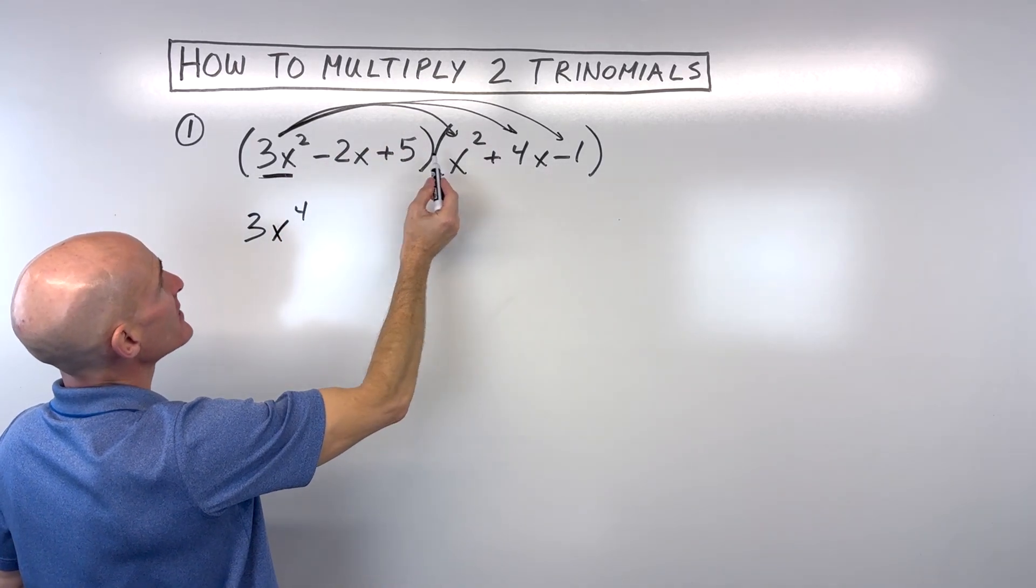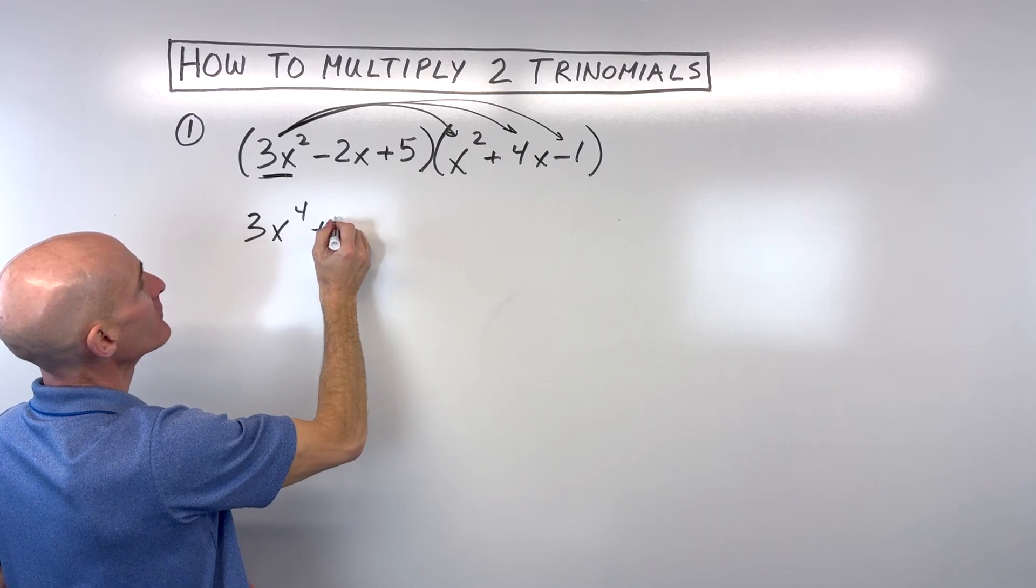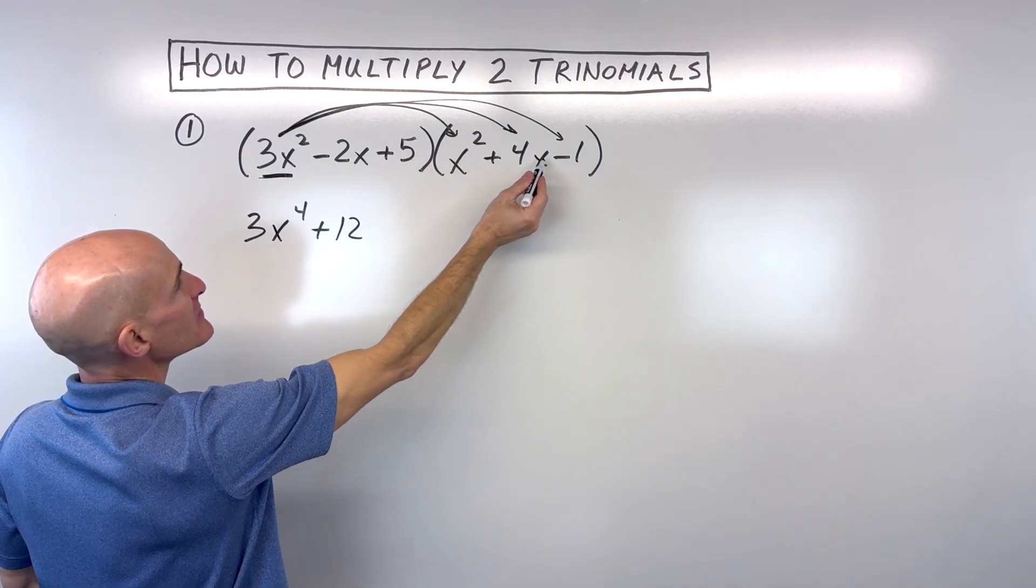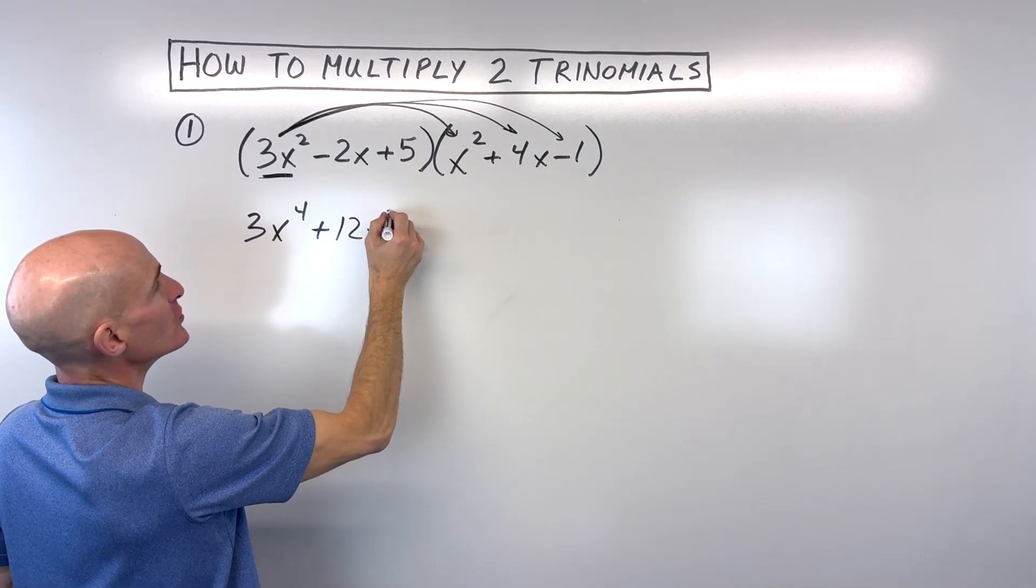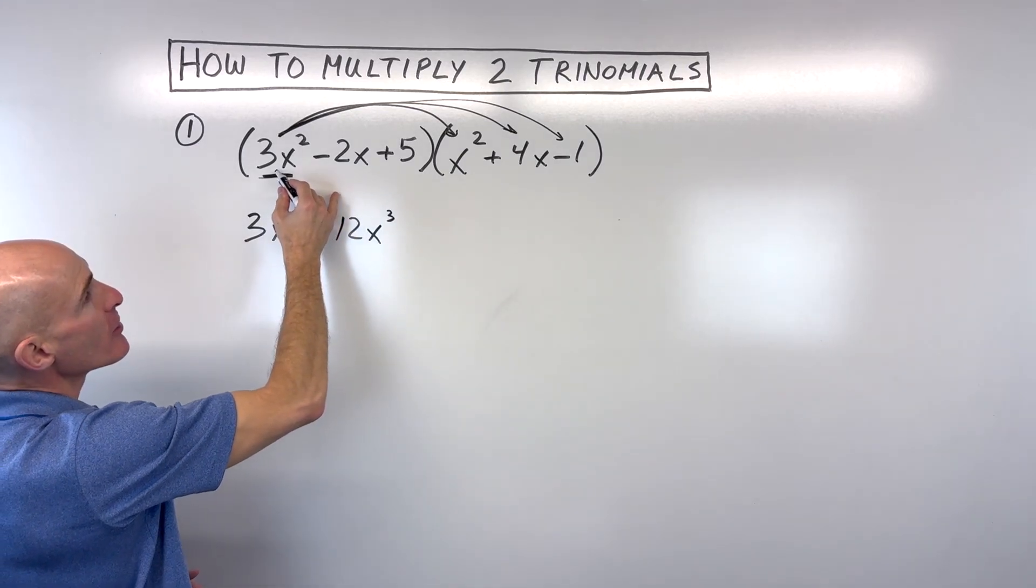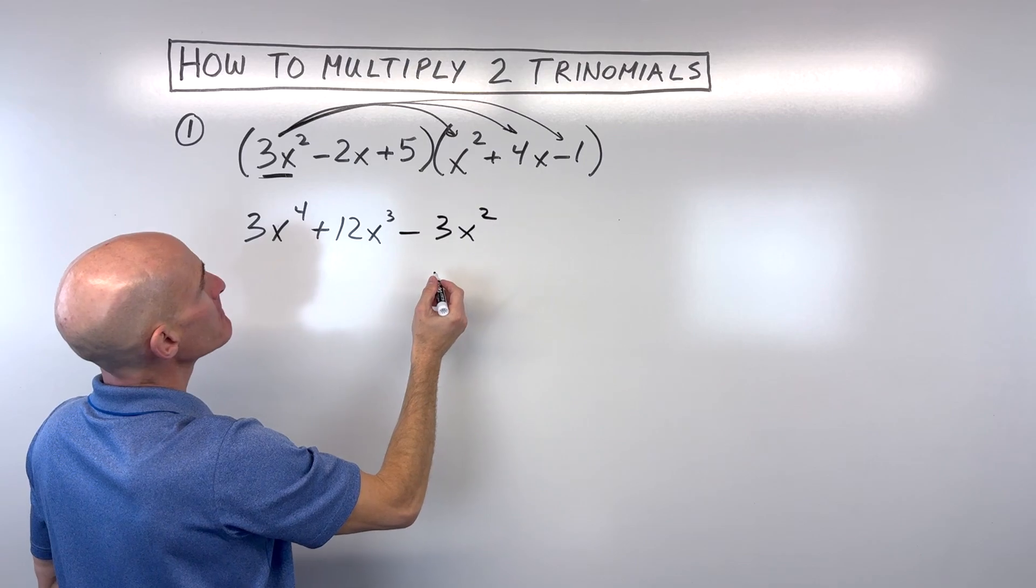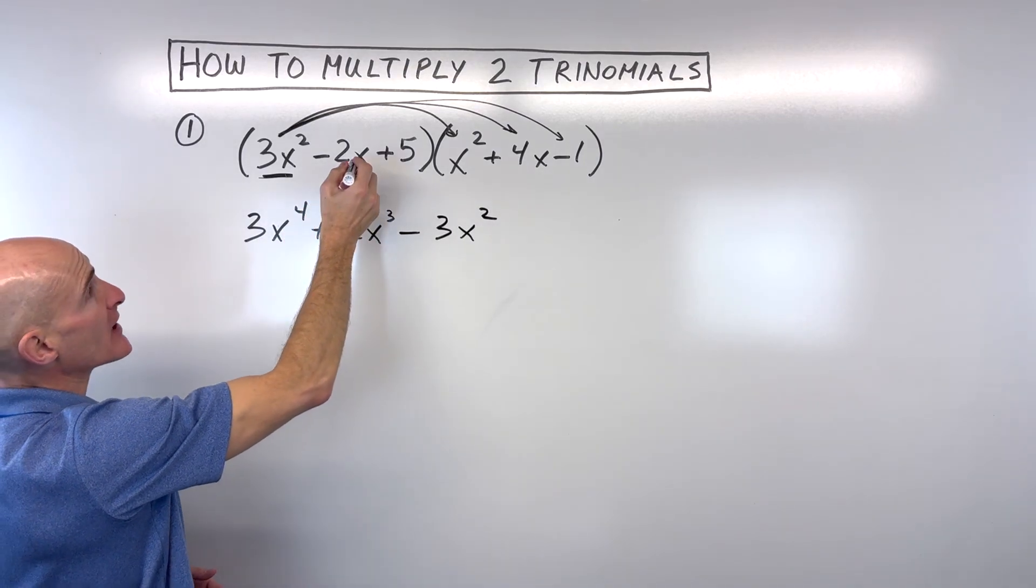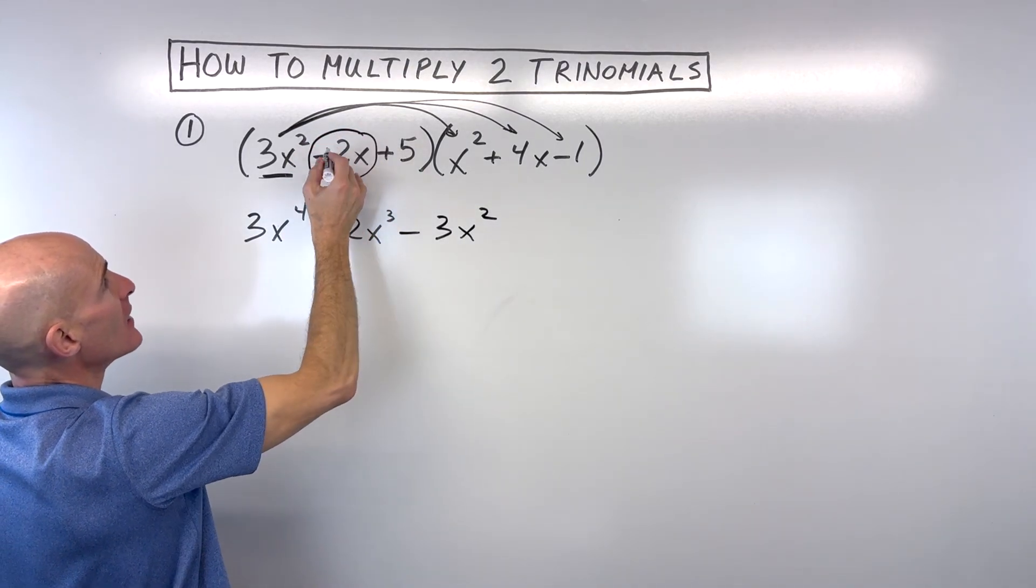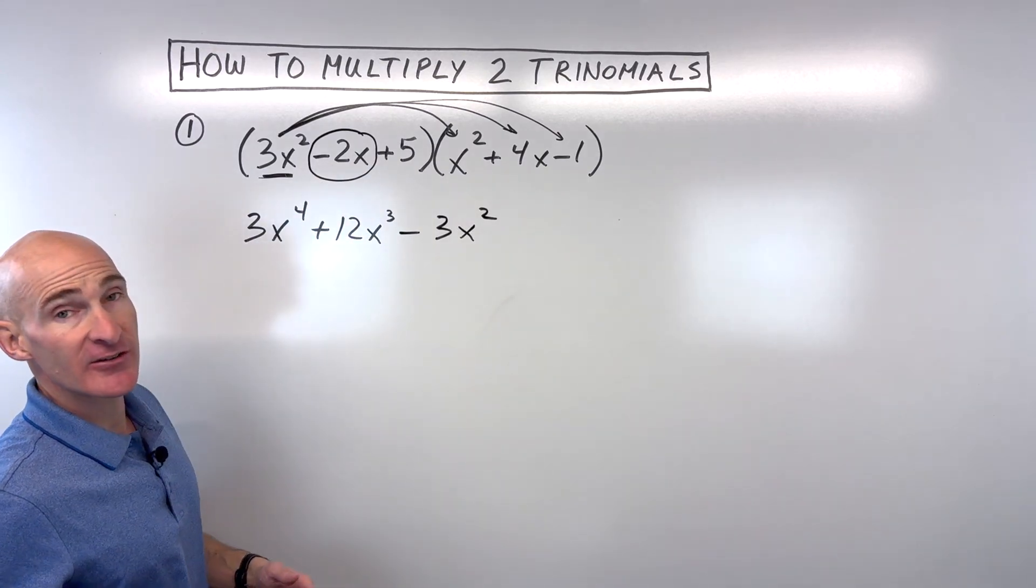Now, when you take 3x squared times 4x, 3 times 4 is 12. And x squared times x to the first is x cubed. Again, just adding those exponents. 3x squared times negative 1 is negative 3x squared. And now we're going to go to negative 2x. Now, you want to make sure you capture whether it's a positive or a negative. Minus is negative, plus is positive.